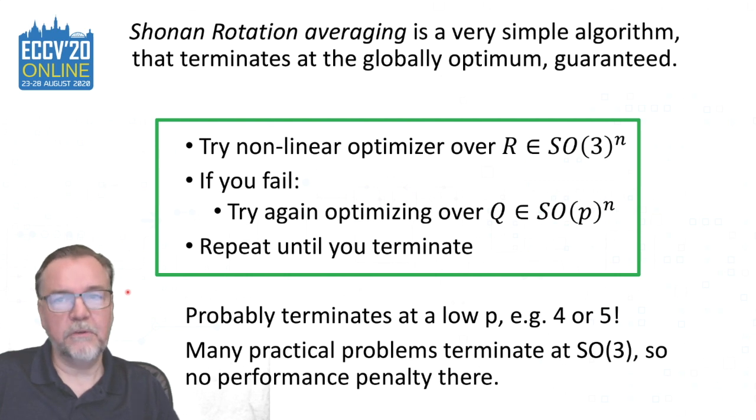But our algorithm Shonan rotation averaging is a very simple algorithm that terminates at the global optimum guaranteed. It's very simple. You simply try optimizing at the SO3 level and if you fail, you try again optimizing over Q matrices at SO4, SO5, SO6, etc., and we repeat this until you terminate. We tell you when you've terminated at the global optimum by calculating a single eigenvalue.